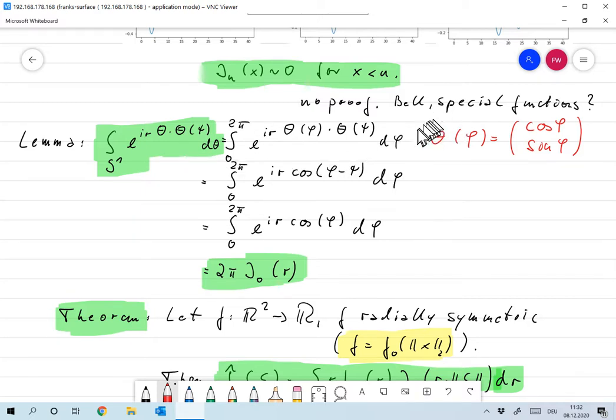So I always use the representation theta of phi as cosine of phi sine phi. So this is one that I will use now throughout the lecture. Okay, let's parametrize the unit circle from 0 to 2 pi. So this becomes now integral from 0 to 2 pi e to the IR theta of phi, and of course R is fixed as well, e to the IR theta of phi times theta of psi d phi.